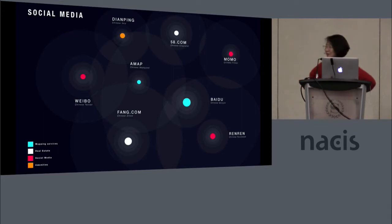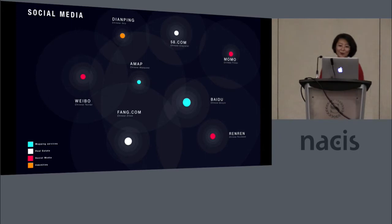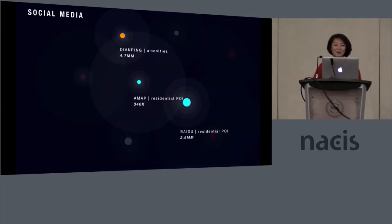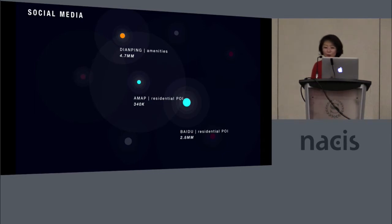We collected a ton of social media data from China. There is basically a Chinese version of every kind of social media outlet we're familiar with here — Chinese Yelp, Chinese Craigslist, Chinese Google, Chinese MapQuest, Chinese Tinder. We ended up using three data sources: Jianping, which is the equivalent of Chinese Yelp, and AMAP and Baidu, which are basically like Chinese MapQuest and Chinese Google. We used the AMAP and Baidu APIs to get residential points of interest.